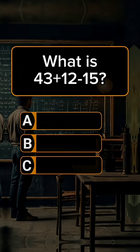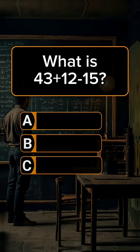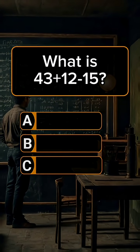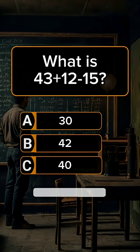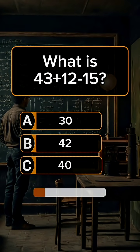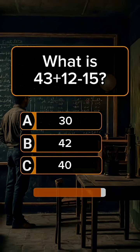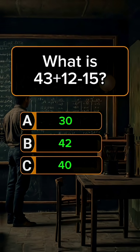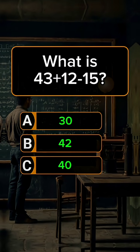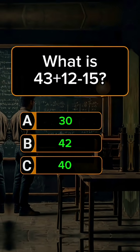Question 7. What is 44 plus 12 minus 15? Answer C. Give me the answer of this question in the comments section. I'll see you next time.